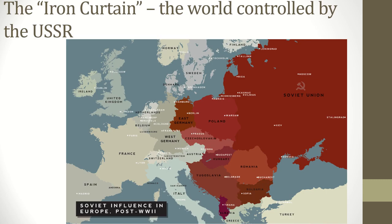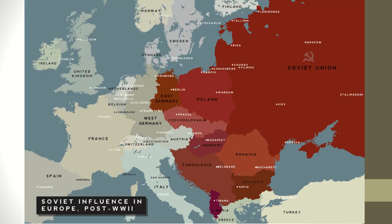In terms of some terminology, Winston Churchill described the world controlled by the Soviet Union as the Iron Curtain. When you hear Iron Curtain, it refers to the secretive world behind Soviet control.